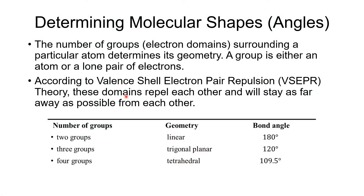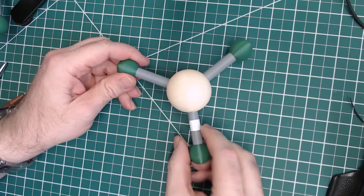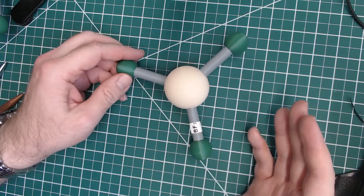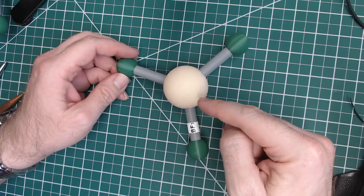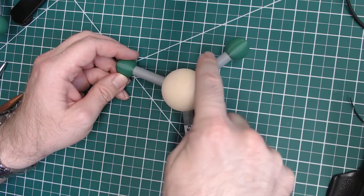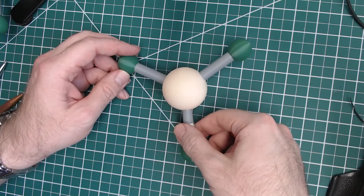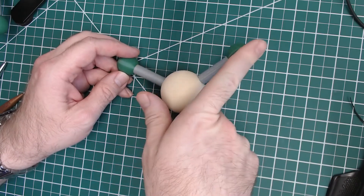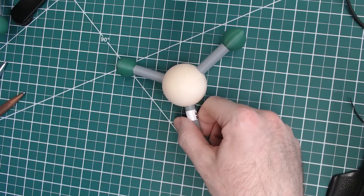When we have three groups, we have trigonal planar electron domain geometry with an angle of 120 degrees. Here is a model of boron trifluoride, which is true of anything with three domains. We've got boron in the middle and three fluorines around the perimeter, and the angle between any of those bonds comes out to 120 degrees.